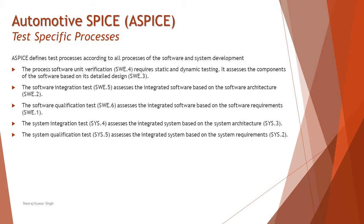This is to understand what different parameters can be covered. There are different process categories and different dimensions, and what we have covered here is between levels 1 to 3.